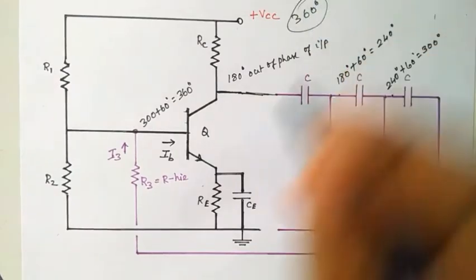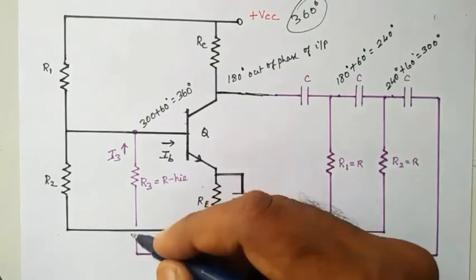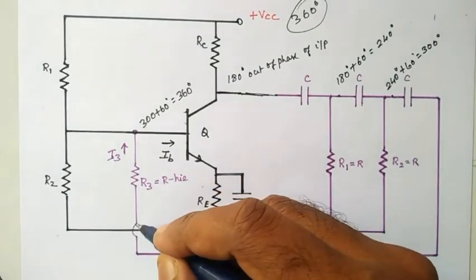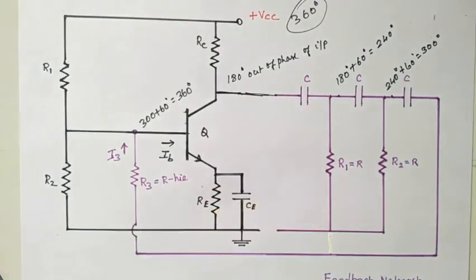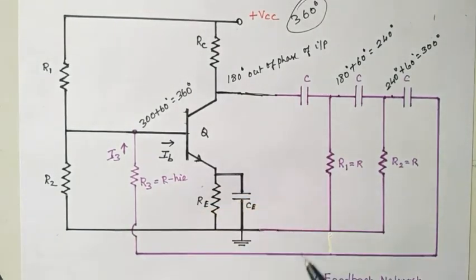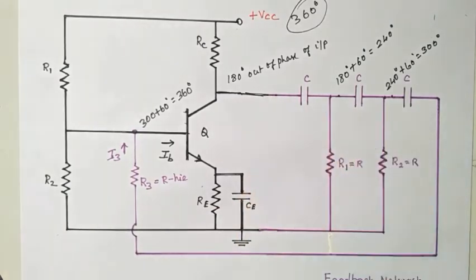This is the construction of the RC network. I have to complete the circuit diagram — here I have left it open, so I need to connect here. Similarly, we also have to connect to the ground, and here it is connected to the output signal.